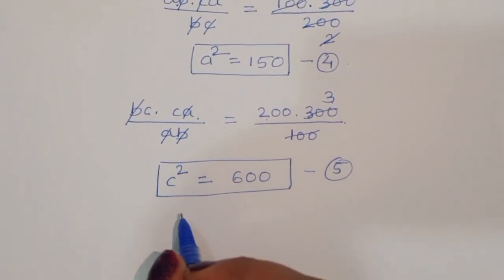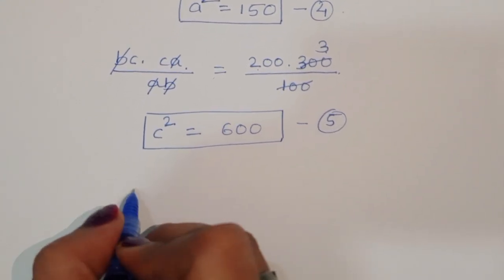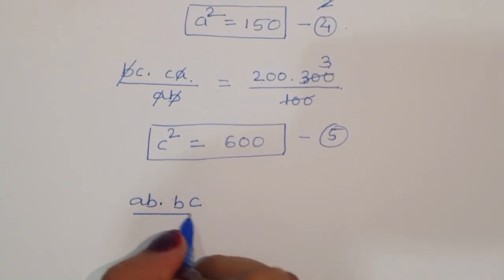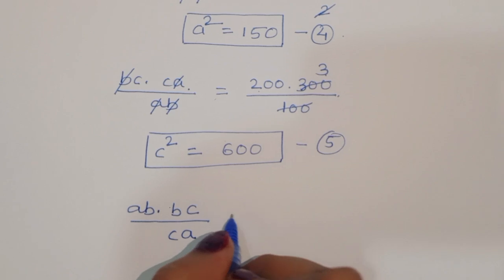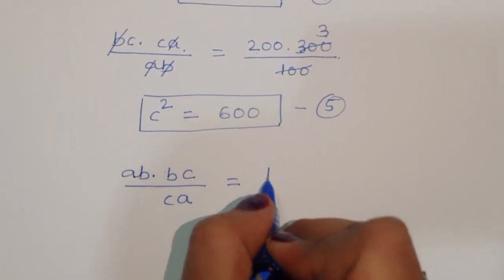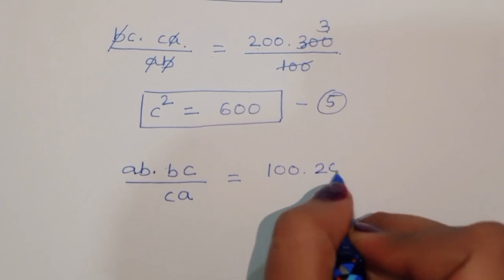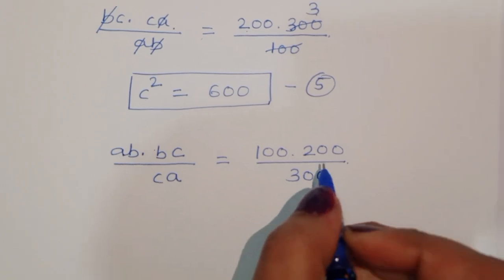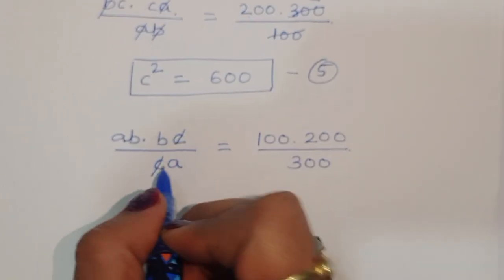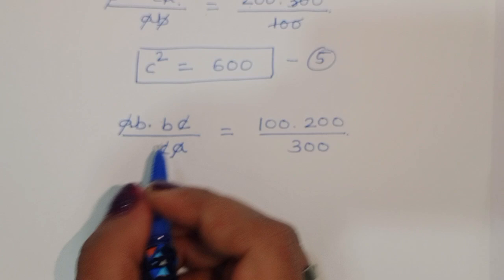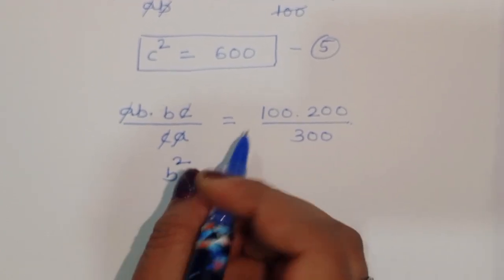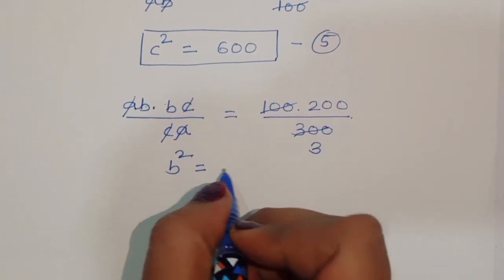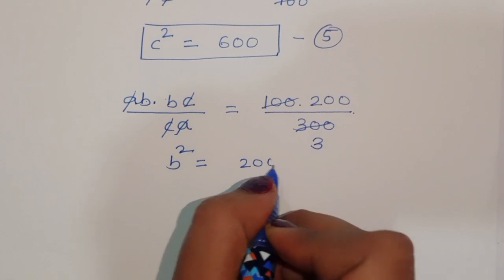For b squared, we can compute AB times BC divided by CA. AB times BC divided by CA equals 100 times 200 divided by 300. Here c cancels from c and a cancels from a, so we get b squared equals 100 times 200 divided by 300, which equals 200 divided by 3. This is equation number 6.